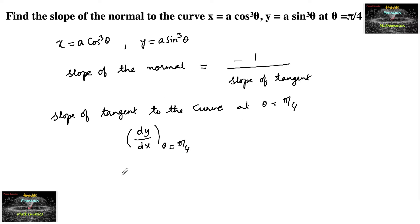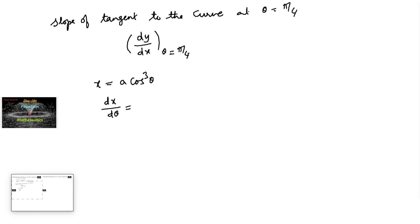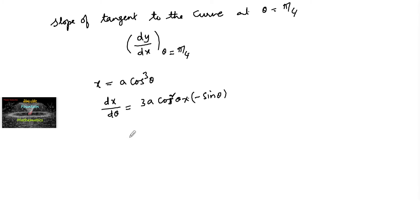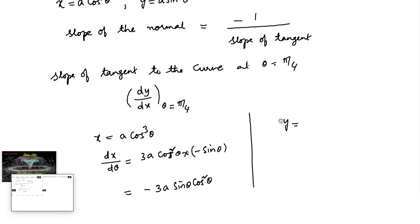Since the given curve equation is in parametric form, let's differentiate x and y with respect to theta. As x is equal to a cos cube theta, differentiating with respect to theta, we get dx by d theta equal to minus 3a cos square theta times sin theta.